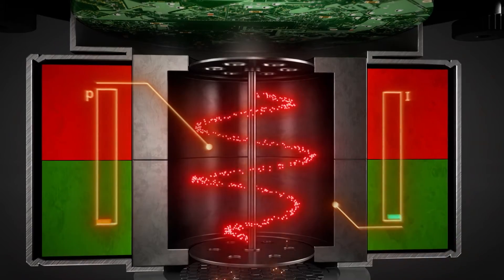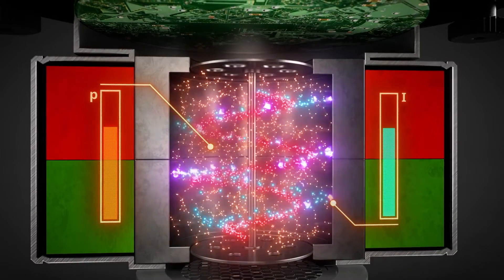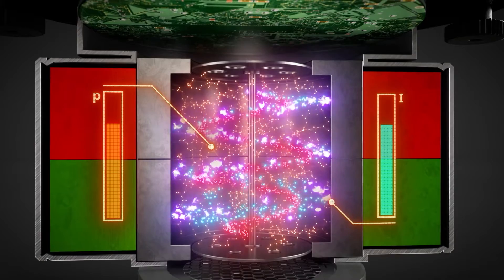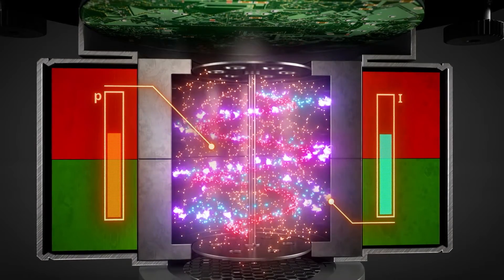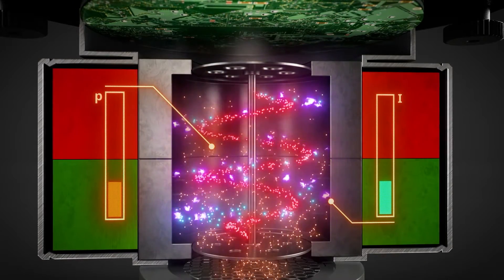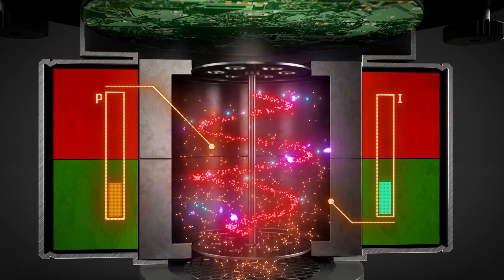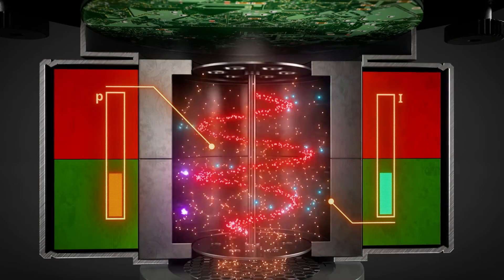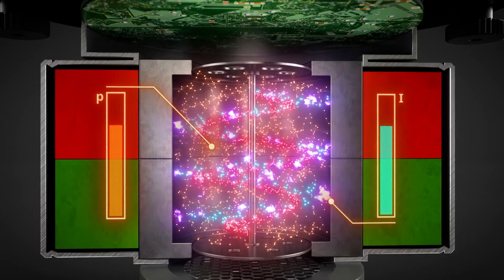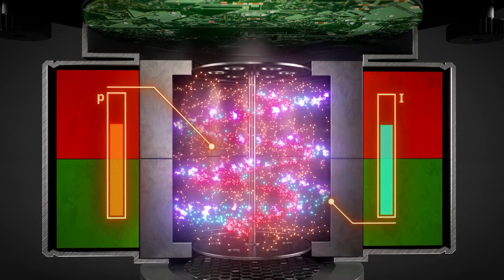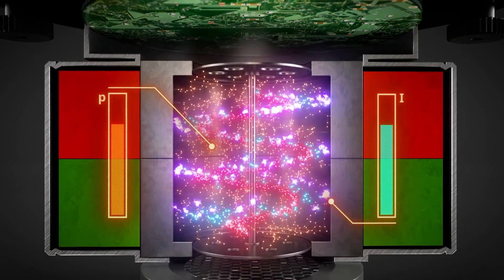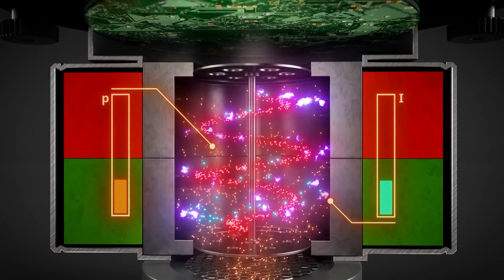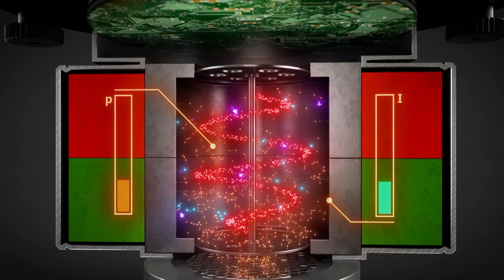As the pressure of the gas increases, so does the number of molecules in the chamber. The possibility for collisions is therefore higher. As a result, more cations and more electrical signals are generated. This means that the current and the pressure are proportional to one another, so the pressure can be determined by measuring the current.